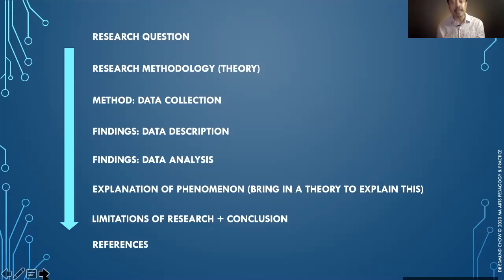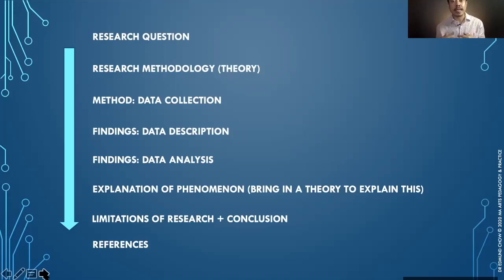There wasn't enough data description, and if you did it, it went all the way into the appendix and didn't add to your argument. Following that, you go into your data analysis of those findings or descriptions, and then you explain a specific phenomenon using a theory to explain what is happening. Then you end with limitations of research, future research implications, and a conclusion leading up to your references.